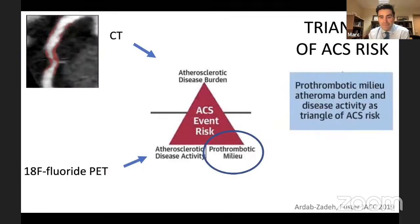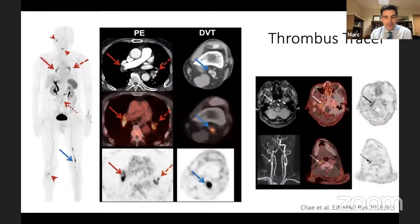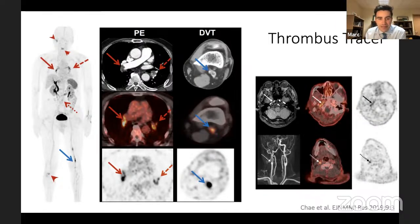This is the final corner of our triangle — the blood. It's pretty difficult to measure blood stickiness, as it varies considerably even within a day. Patients who smoke and have sticky blood are at higher risk of myocardial infarction. Can we image it? There's a very exciting new PET tracer called 18F-GP1, which appears to localize very avidly to fresh thrombus.